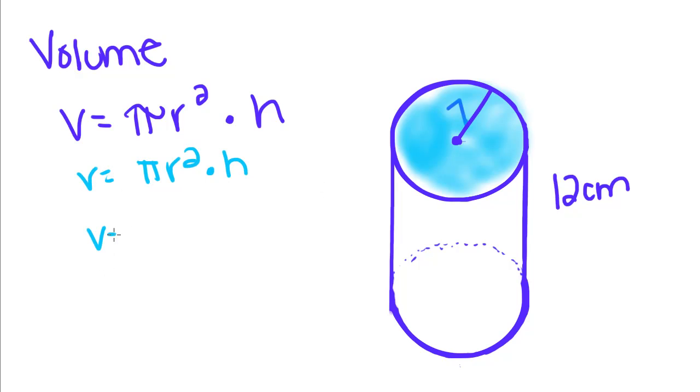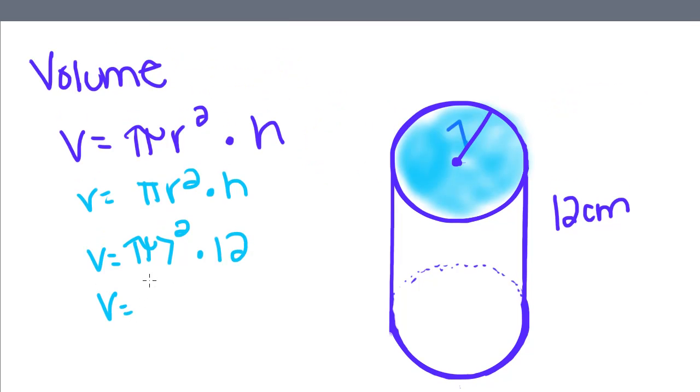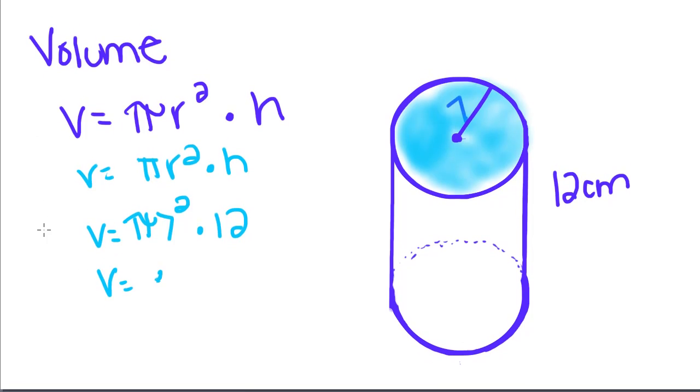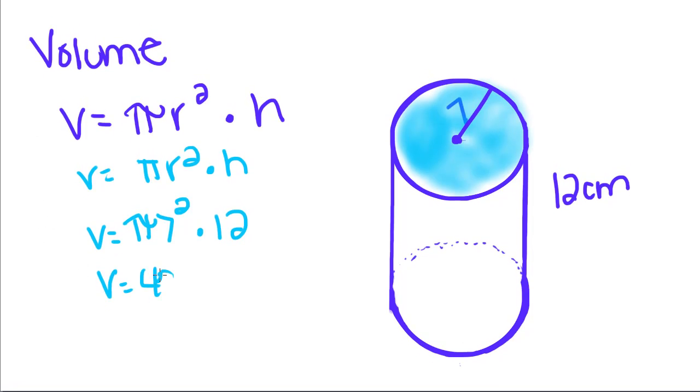So the volume of this cylinder is equal to π radius squared times 12. This is equal to 49π times 12. Those are kind of big, so I'm going to put those in the calculator: 49 times 12, so 588π. I'm just going to leave the π like that so we give it a more exact answer.